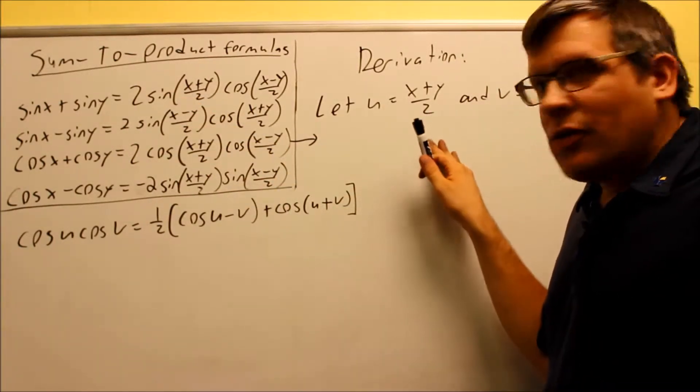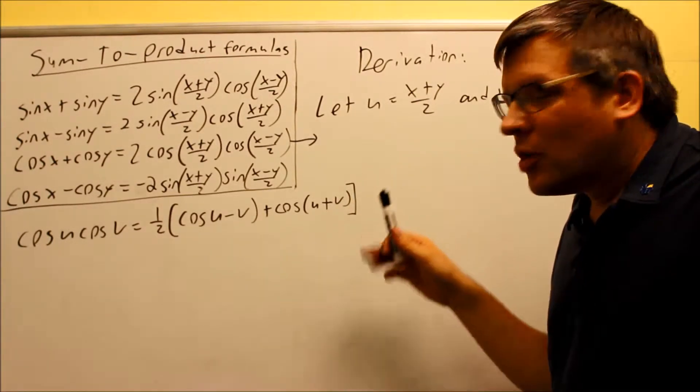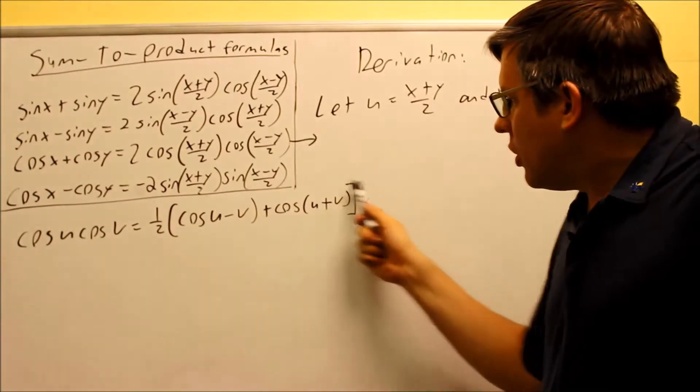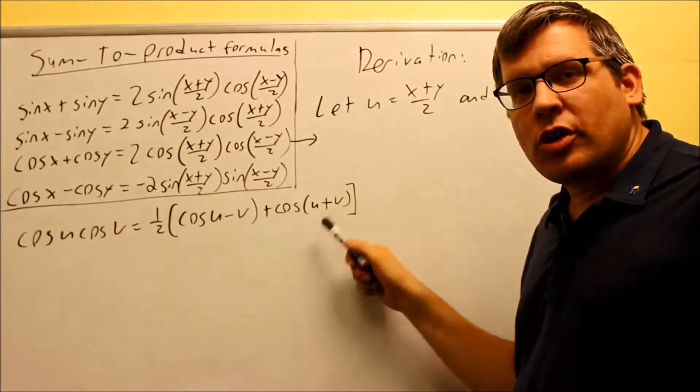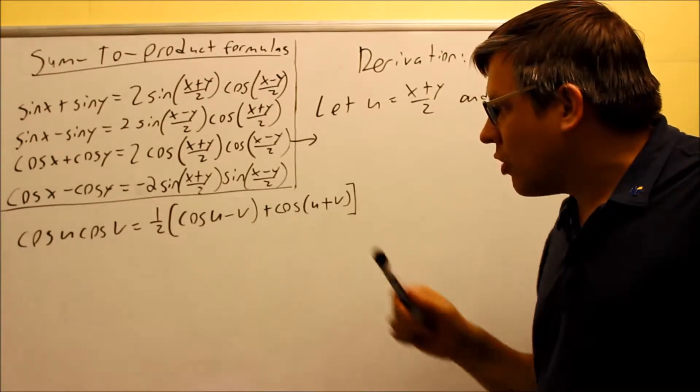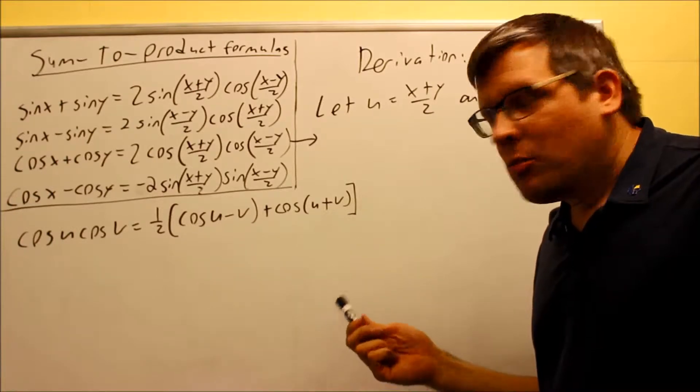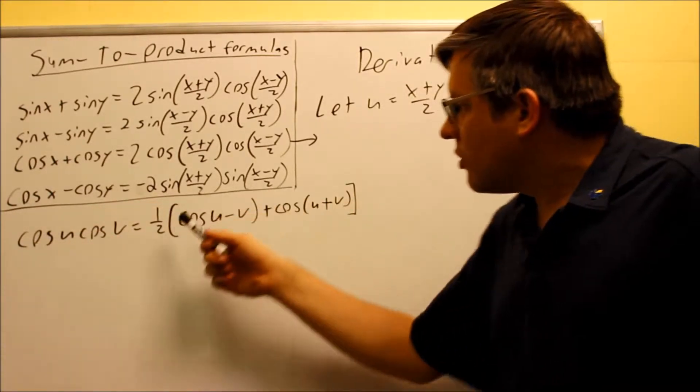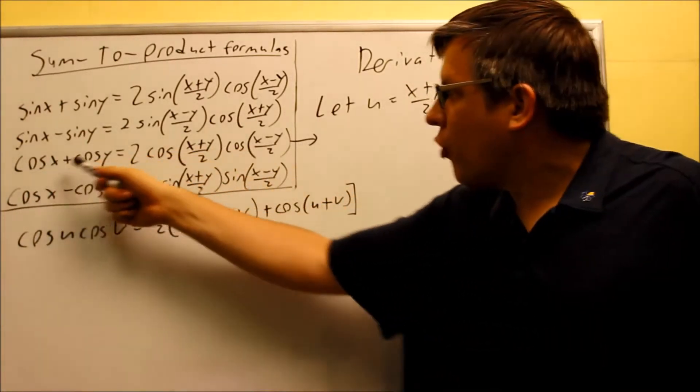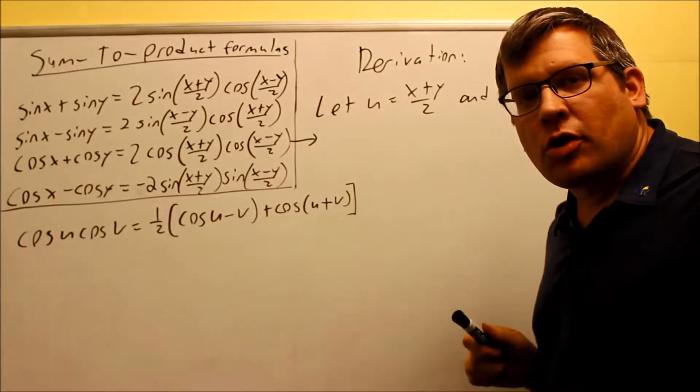So I'm going to derive where one of these comes from, and the other ones can be derived in a similar fashion. I'm going to start with a formula that we've already derived in a previous video. This is our product-to-sum formula, and we did this one by using the sum and difference formulas. I'm going to use this one that we derived to derive the third formula, the one with the arrow next to it.